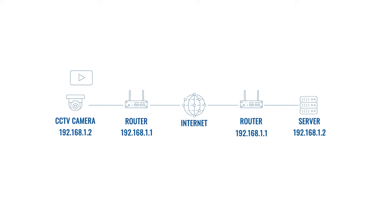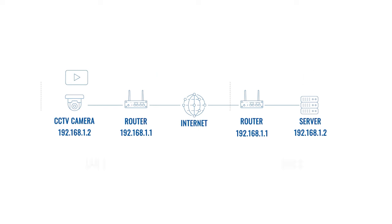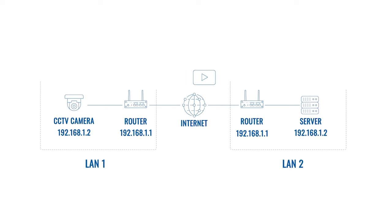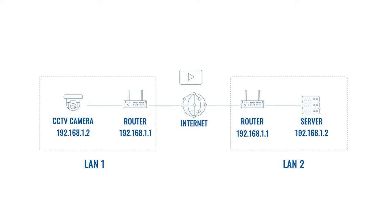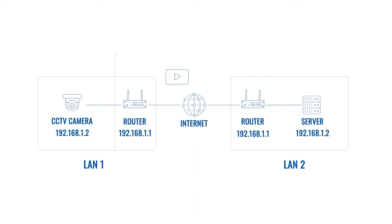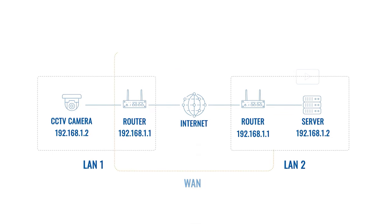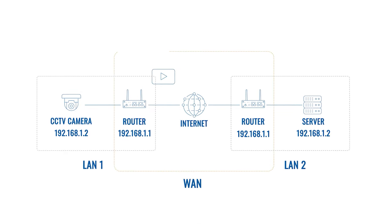However, if, for example, a CCTV camera wants to send a video file to a remote server from a different LAN network, this has to be done over the internet. That's where Wide Area Network, or WAN, gets involved.